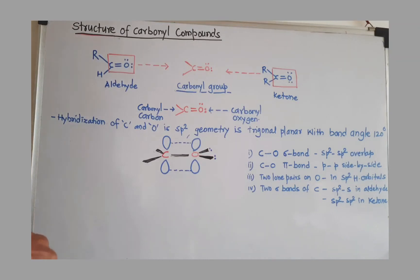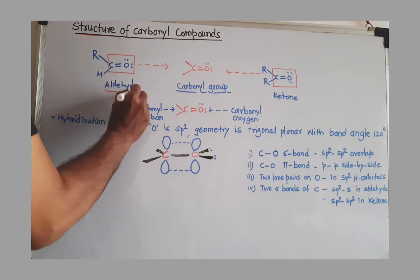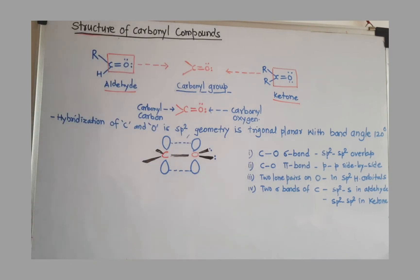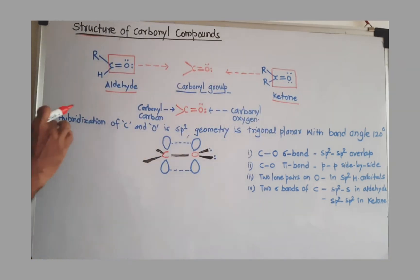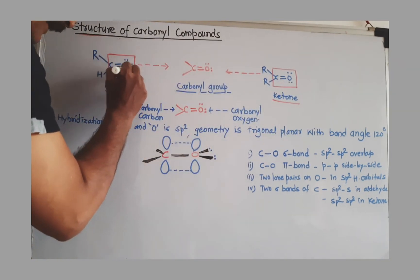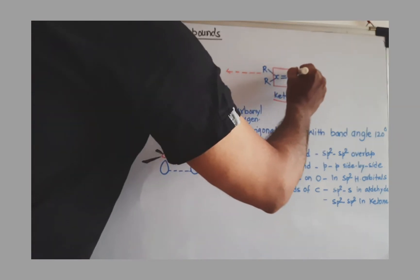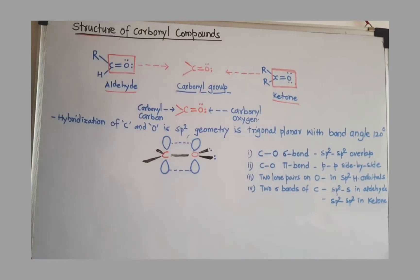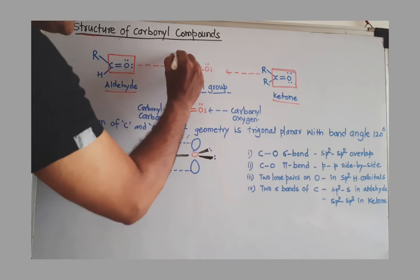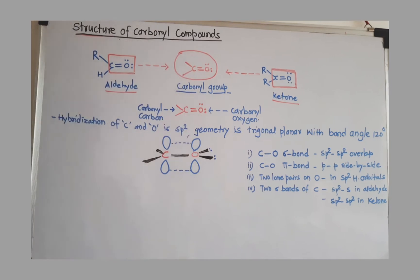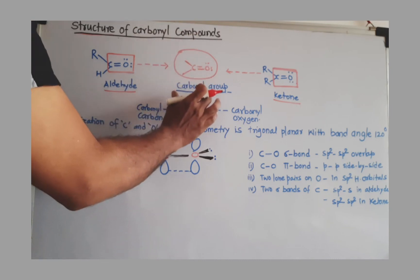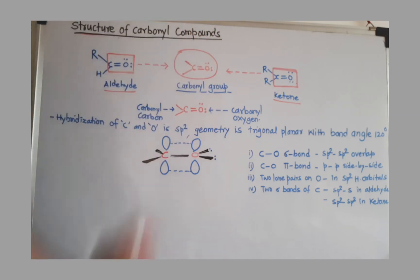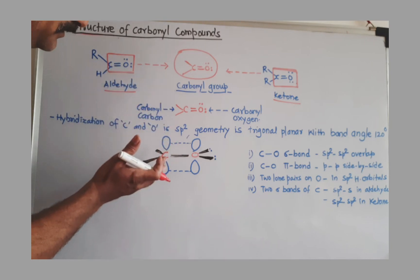We know carbonyl compounds are aldehydes or ketones. Looking at the structure of aldehyde and ketone, one thing is common — that common part, shown using the red square, is called the carbonyl group. The carbonyl group is common for both aldehyde and ketone, so if we discuss the structure of the carbonyl group, we will get the structure of carbonyl compounds.